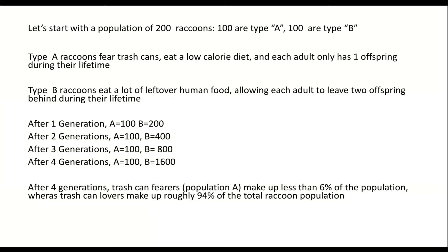After one generation, Population A has 100 members, whereas Population B has doubled to 200 members. After two generations, Population A still has 100 individuals — each raccoon essentially replacing itself — while Population B has doubled again. After three generations, Population A has 100 individuals while Population B is now at 800. After four generations, the trash-can-fearing raccoons make up less than 6% of the total raccoon population, while the trash-can-loving raccoons make up 94% of the total population.